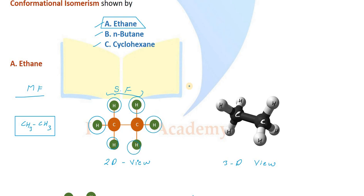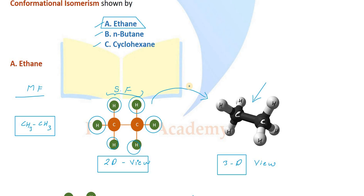This is the 2D view. If we need the 3D arrangement of C2H6, we need to consider the spatial arrangement of carbon and carbon with their respective hydrogens. This is the 3D arrangement of ethane.